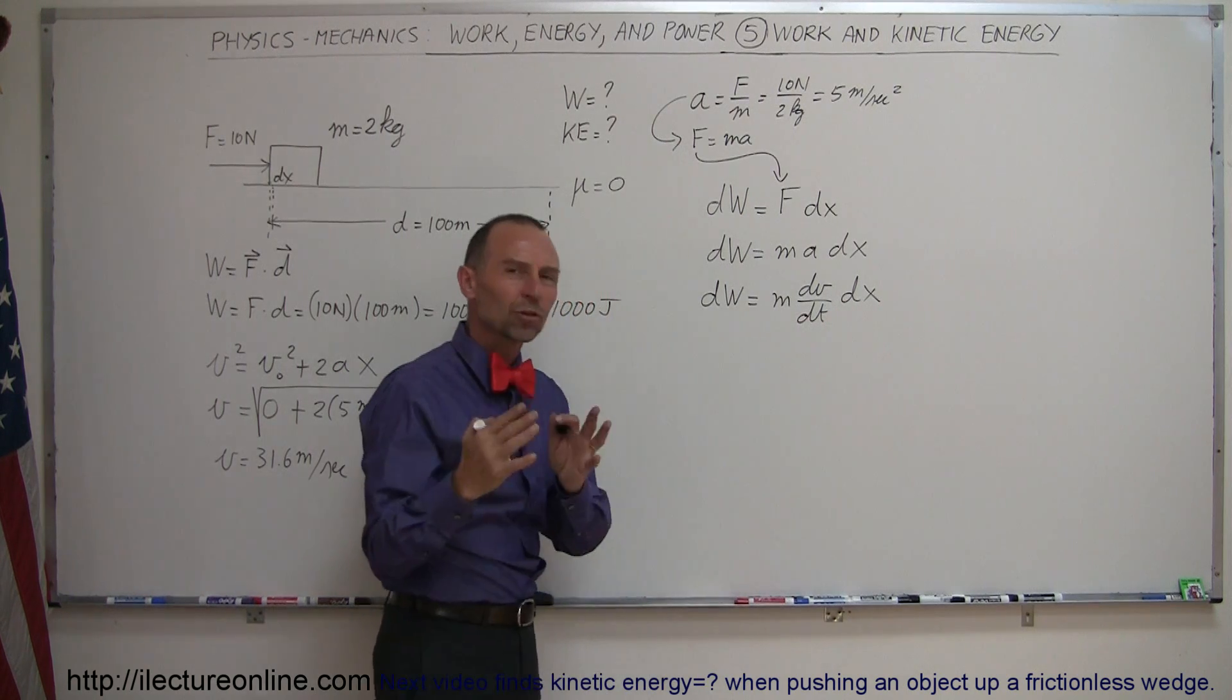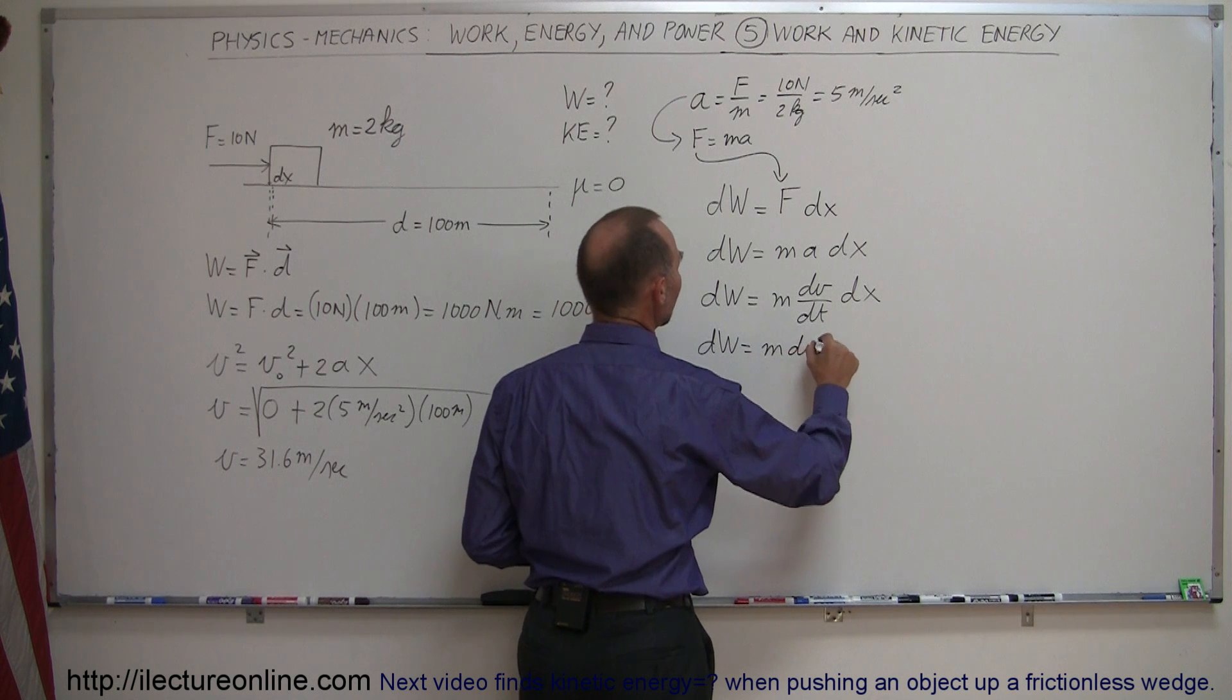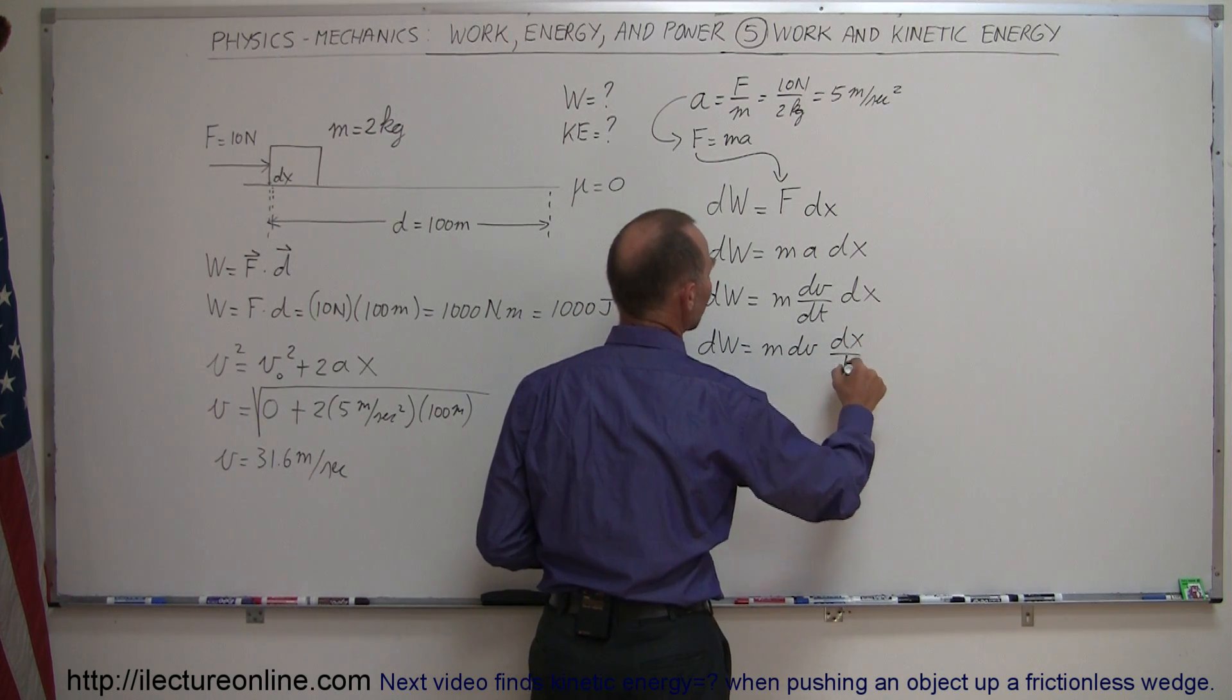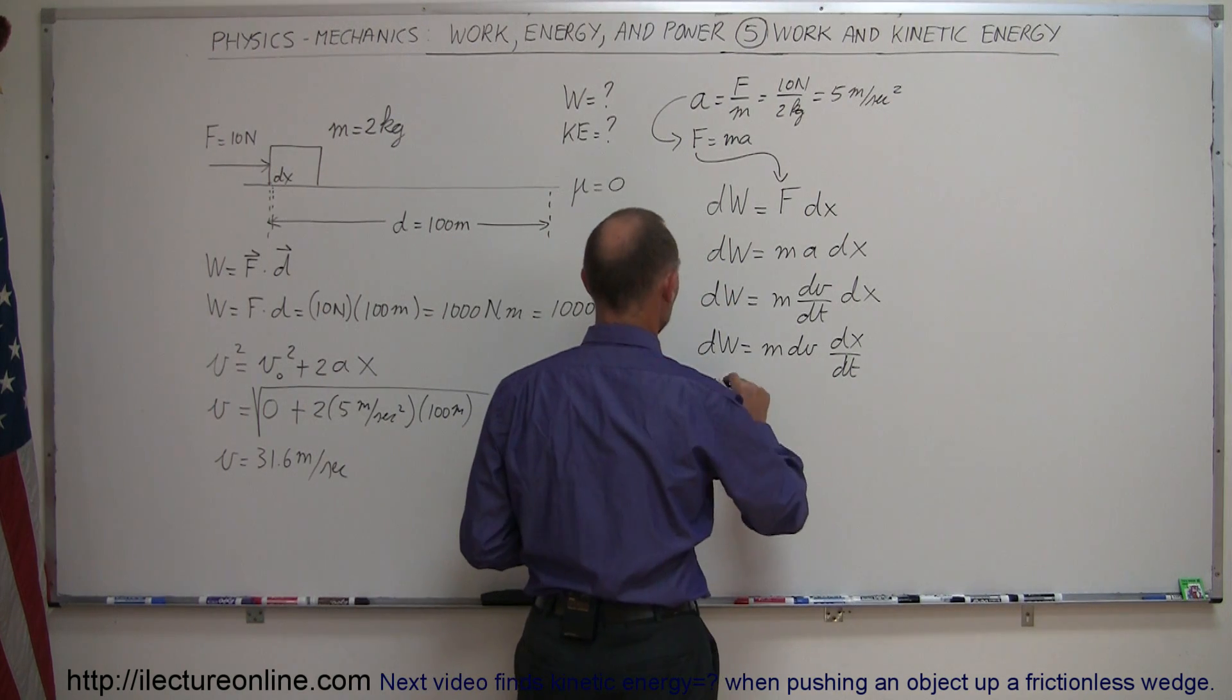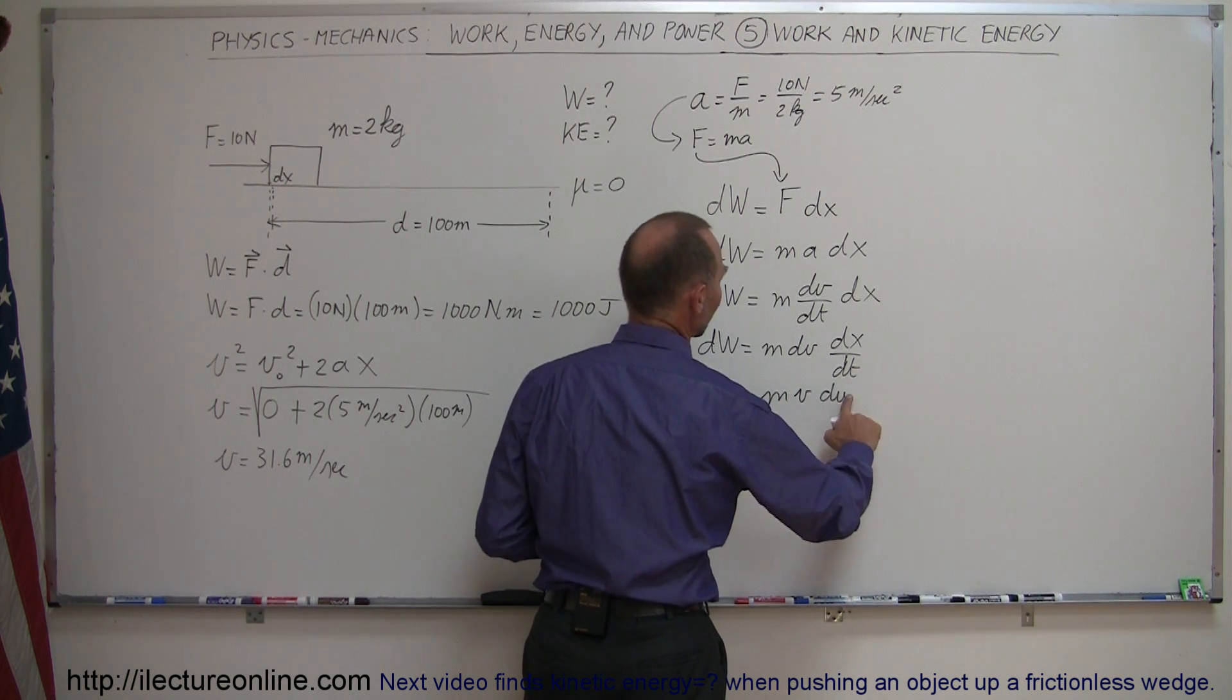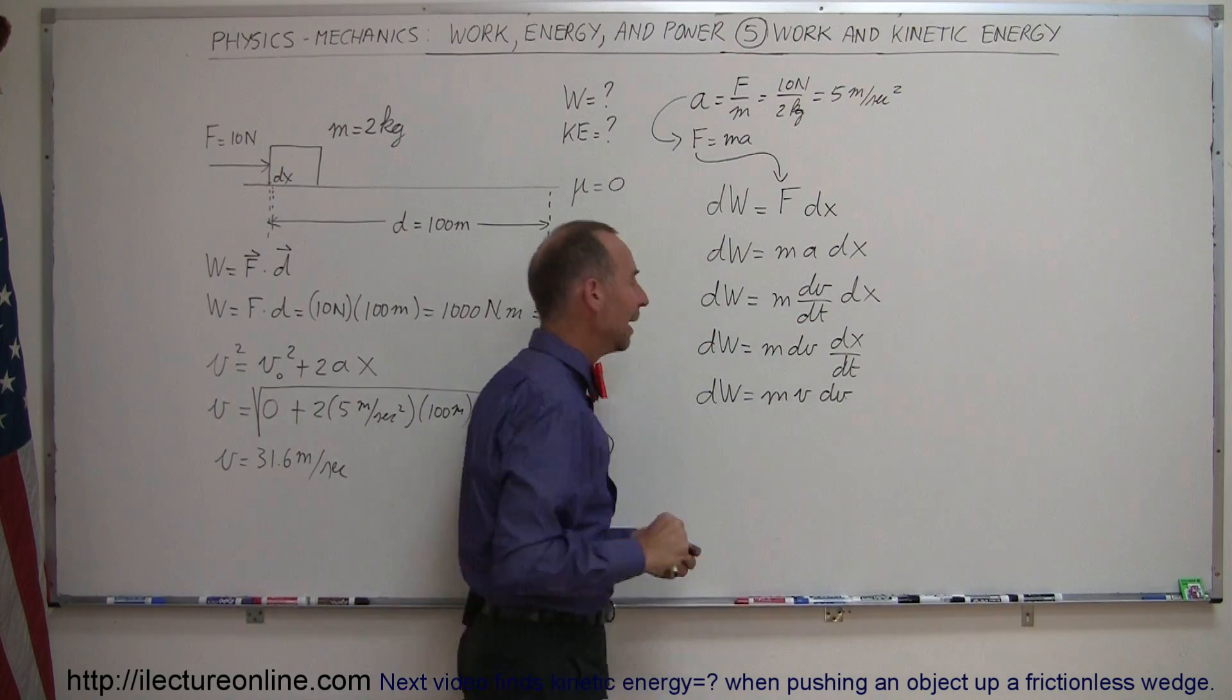Then if we move the dt over here, we don't have to do that, but just to make it more visible, we can write dW is equal to mass times dV times dx dt, and of course the definition of dx dt is that that's equal to the velocity, which means that dW is equal to m times v times dV. I just move the dx dt, which is v, over in between m and dV.